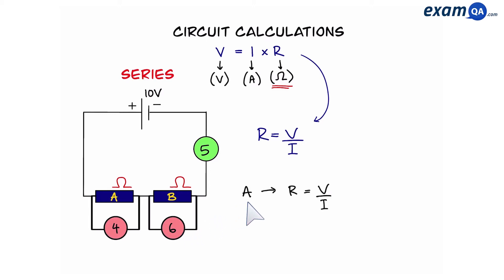Ok let's work out the resistance of A. So we're going to put voltage over current. We can see that A has a voltage of 4 and the current is the same everywhere so 5 and that gives us 0.8. Now let's do the same for B. So 6 is the voltage and 5 is the current and that gives us 1.2.